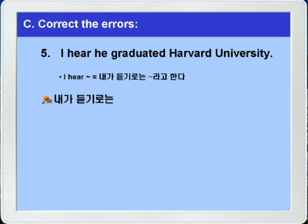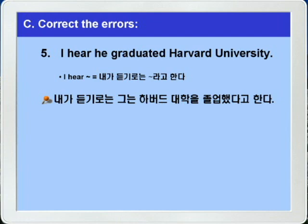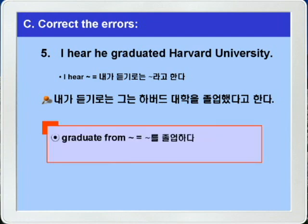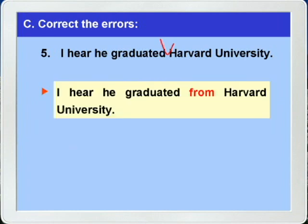5번, I hear he graduated Harvard University. 내가 듣기로는 그는 Harvard 대학을 졸업했다고 한다는 말이죠. 어디를 졸업하다는 graduate from을 씁니다. graduated 다음에 전치사 from을 써줘야 하죠. I hear he graduated from Harvard University.